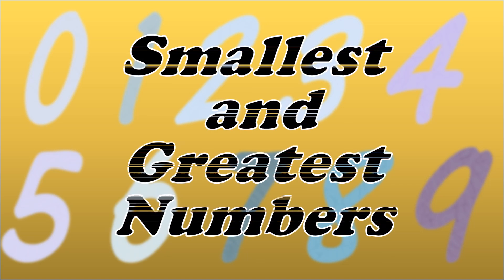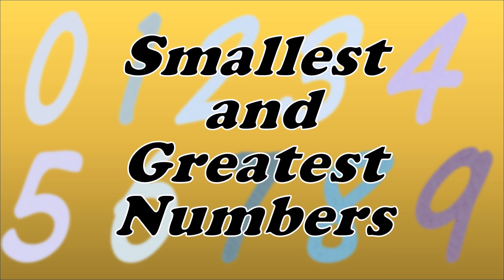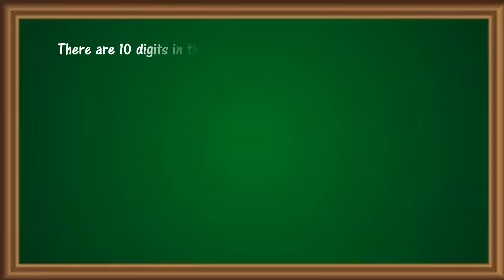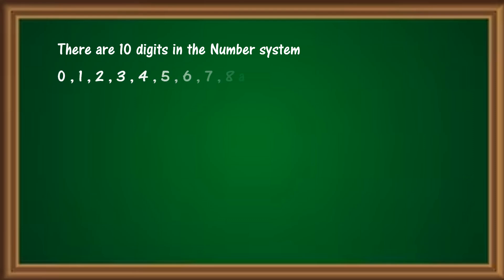In this video, I am going to explain about smallest and greatest numbers. We already know that there are 10 digits in the number system and they are 0, 1, 2, 3, 4, 5, 6, 7, 8, and 9.